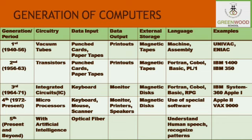Fourth generation computers are the present generation computers — the ones we are using today — launched from the year 1972 till present. Microprocessors are used. For data input we use keyboard, mouse, scanners, etc. For output we use monitor, printers, speakers, etc. Fifth generation will be the future generation. They will use artificial intelligence, and for data input they will use optical fiber and will understand human speech.